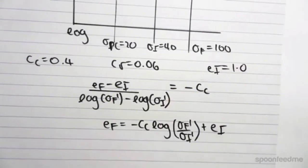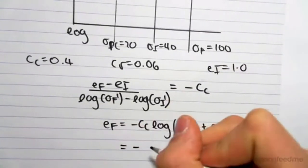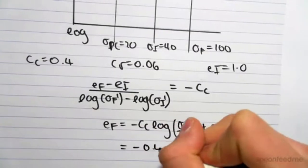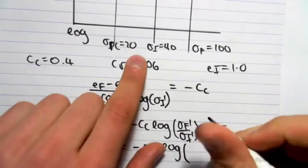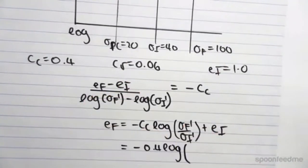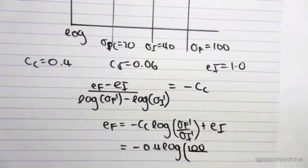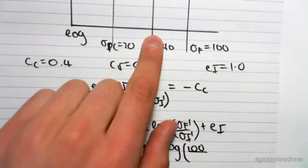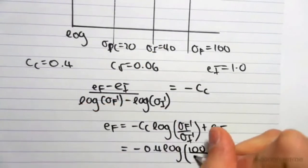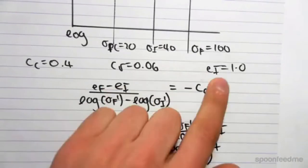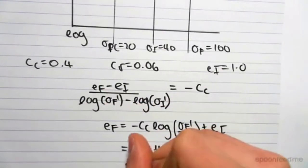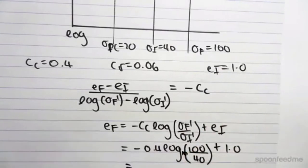All right, now we can plug in all these values. So minus cc is 0.4, so minus 0.4 log sigma final. The final stress we experienced was 100. The initial stress we experienced was 40, so 100 over 40 plus the initial void ratio was 1.0. This is log base 10, so we can calculate this.